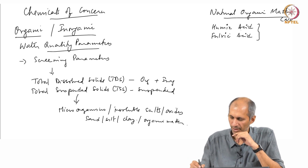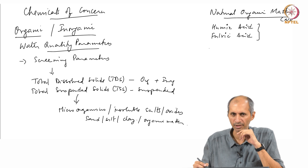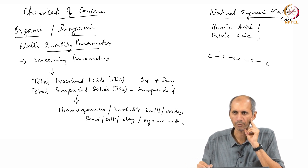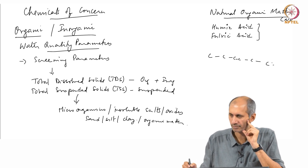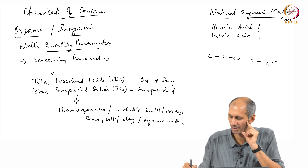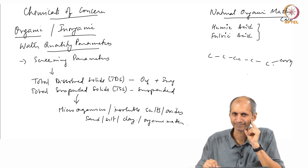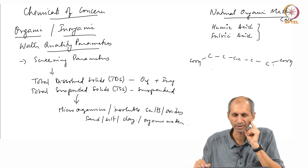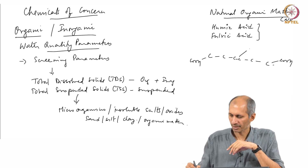Humic acid and organic matter have a general structure with a C-C-C-C carbon backbone. At the end you can see there is an acid group, meaning there is a -COOH group somewhere. It can have multiple -COOH groups or a single one, and the structure can be branched.